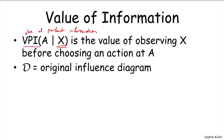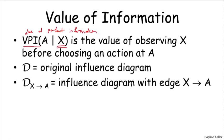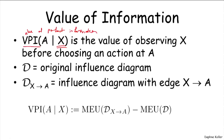How do we give that a formal value? If D was our original influence diagram before I had the opportunity to observe X, we can compare the value of D to the value of a different influence diagram — the one where we introduce an edge from X to A. That tells us what the value of the situation would be if we had the ability to make that observation. So we define the value of perfect information as the difference between the maximum expected utility when I have that observation, minus the expected utility when I don't.